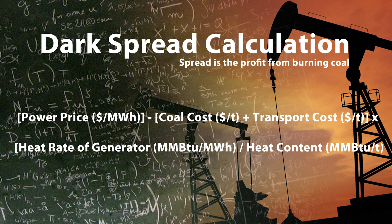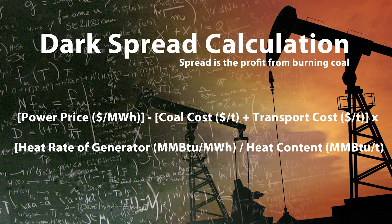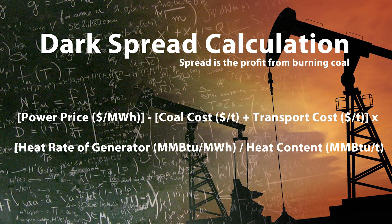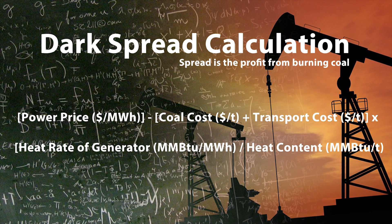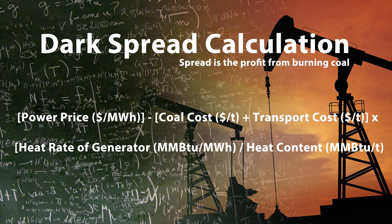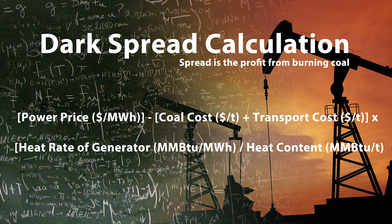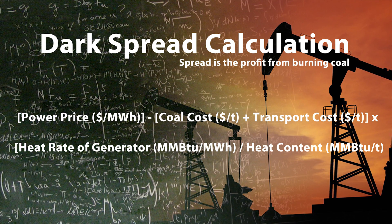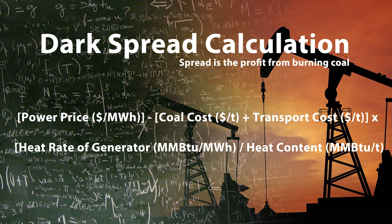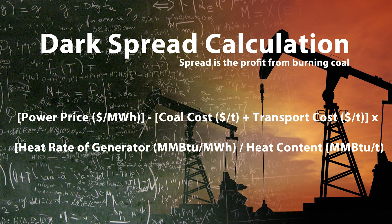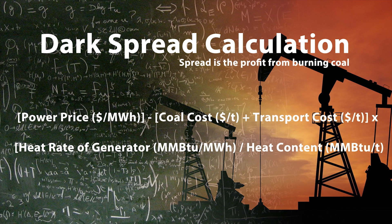The next two terms — the heat rate and the heat content — are functions of the physical nature of the process. Fundamentally what we're doing is taking the energy that's in the coal, burning it and converting it into electricity. Therefore we need a function that accounts for the amount of energy within the fuel — that's the heat content — and also how efficient we are at extracting that heat, which is the heat rate, measuring the efficiency of the unit. Once you combine these terms, we have the power price as revenue, the coal and transportation cost, and the conversion factor, which is effectively the heat rate and the heat content.